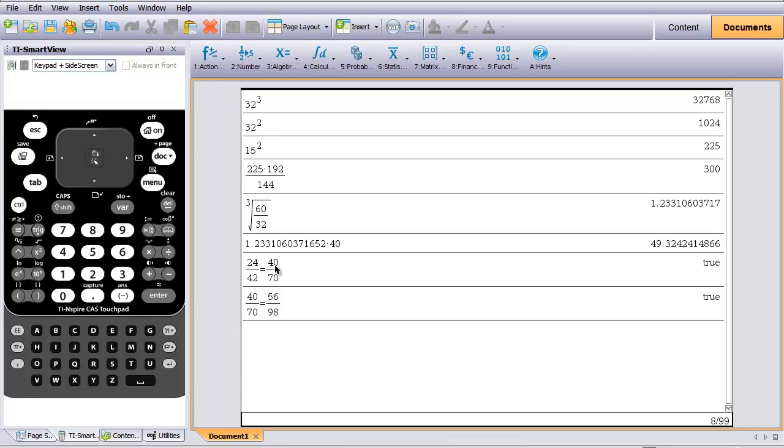And then I took 40 over 70 and said it was equal to 56 over 98. Once again, I hit enter, and when I do that, my calculator also told me that was true. Therefore, all three of those ratios must be equal to each other by the transitive property. 24 over 42 is equal to 40 over 70, which must also be equal to 56 over 98. So I can say that those two triangles are similar to each other.